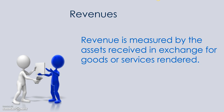Revenues are measured by the assets received in exchange for goods or services rendered. The key thing to remember is that revenues relate to activities done in the normal course of business — services or products that you sell. Not everything qualifies as revenue. For instance, if you sold an automobile owned by the business for $5,000, that wouldn't necessarily be categorized as revenue if you're not in the business of selling automobiles. Revenue applies to what you normally do in your everyday business activities.